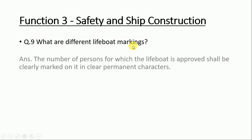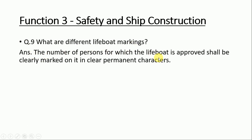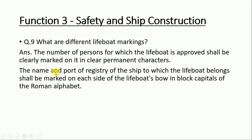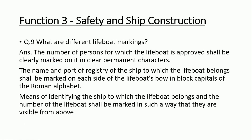Question number nine: what are the different lifeboat markings? First, the number of persons for which the lifeboat is approved shall be clearly marked in permanent characters. Second, the name and port of registry of the ship shall be marked on each side of the bow in block capitals of the Roman alphabet. Third, means of identifying the ship to which the lifeboat belongs must be marked. Fourth, the lifeboat number shall be marked so it is visible from above.